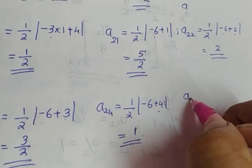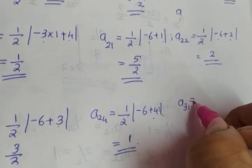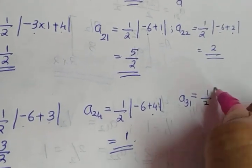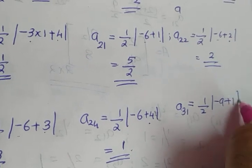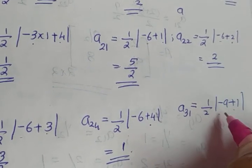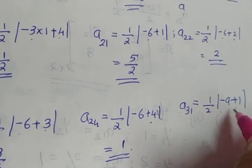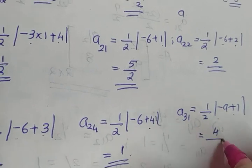We move to A31 — third row, first element. A31 will be half into minus 9 plus 1. Minus 9 plus 1 is minus 8. Modulus is 8 and half of 8 is 4.